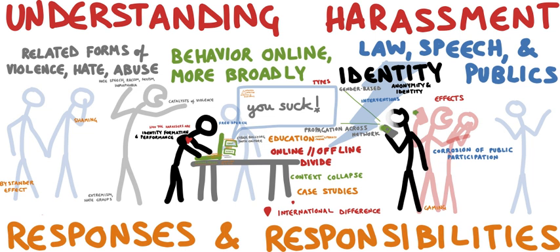When the individual is the main target of cybercrime, the computer can be considered as the tool rather than the target. These crimes generally involve less technical expertise. Human weaknesses are generally exploited. The damage dealt is largely psychological and intangible, making legal action against the variants more difficult. These are the crimes which have existed for centuries in the offline world. Scams, theft, and the likes have existed even before the development of high-tech equipment. The same criminal has simply been given a tool which increases their potential pool of victims and makes them all the harder to trace and apprehend.